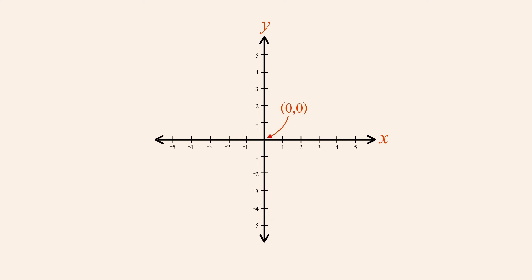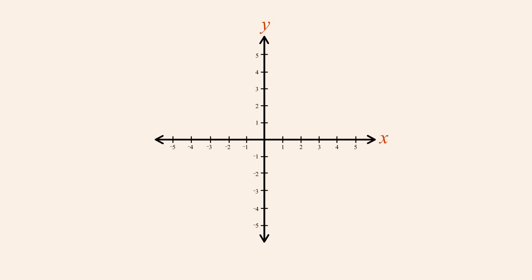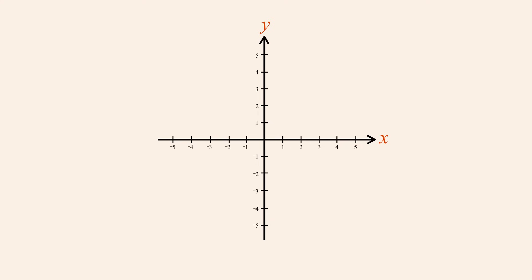The infinite plane containing the x and y-axis is referred to as the Cartesian plane or the x-y-plane. The axes divide the x-y-plane into four regions called quadrants, numbered from the first to fourth starting with the upper right quadrant and continuing counter-clockwise. The quadrants are usually denoted with Roman numerals. Many mathematicians prefer to draw number lines and axes with arrows pointing towards the positive direction only, indicating the direction of increasing value.